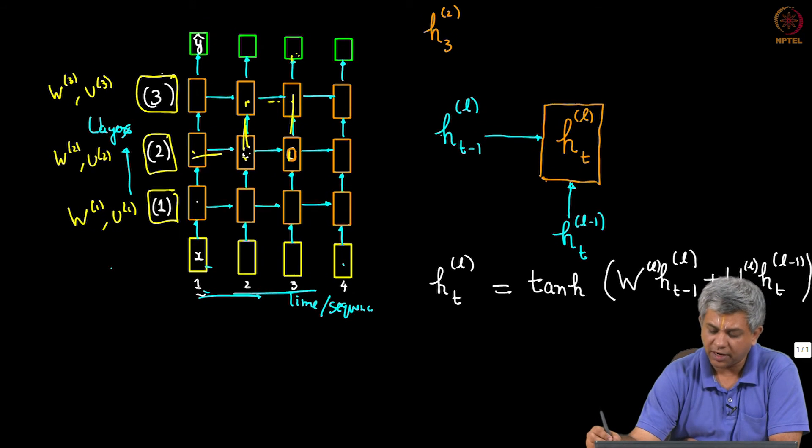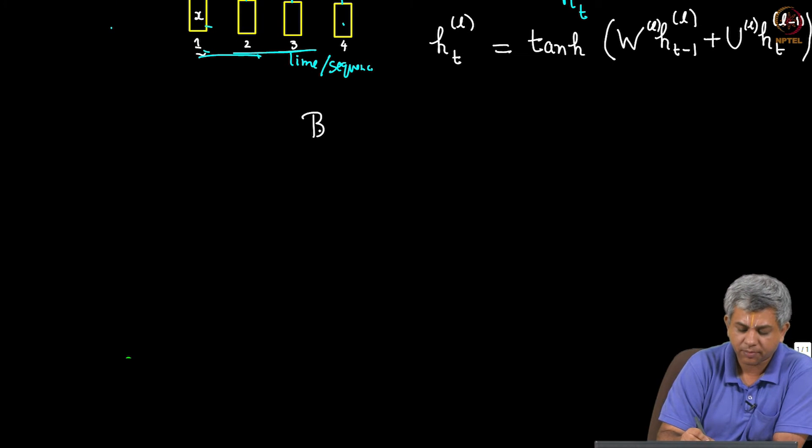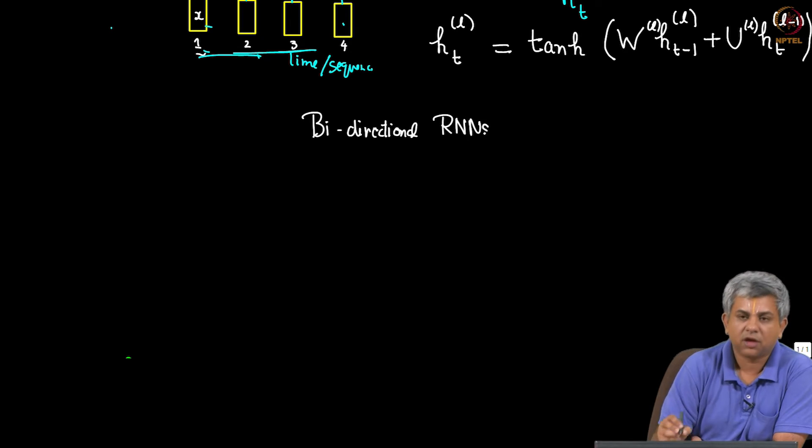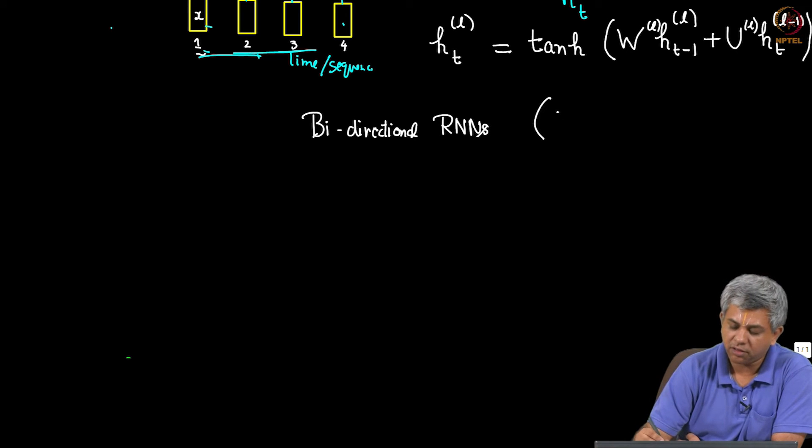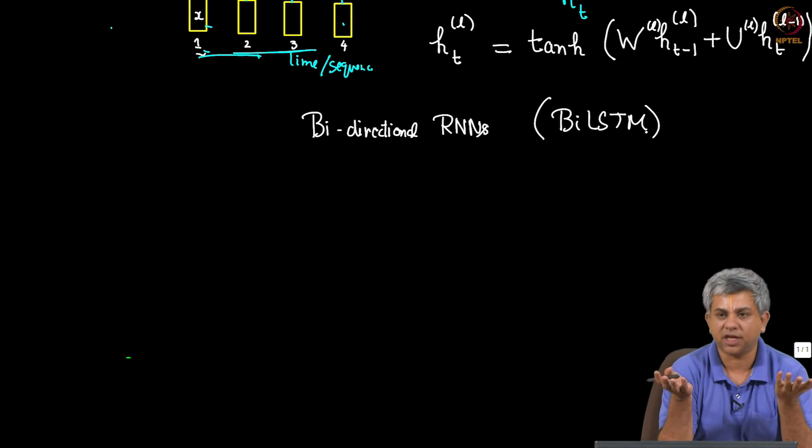The second thing that we look at is something called bidirectional RNNs. Sometimes you might even find the term bi-LSTM which simply is a bidirectional RNN using LSTMs rather than the usual RNN. These might be deep or not deep, it really does not matter.